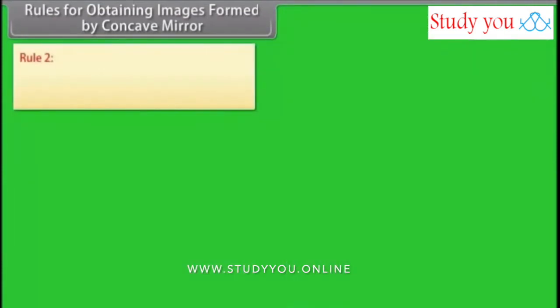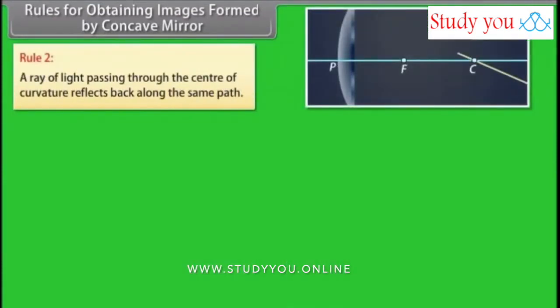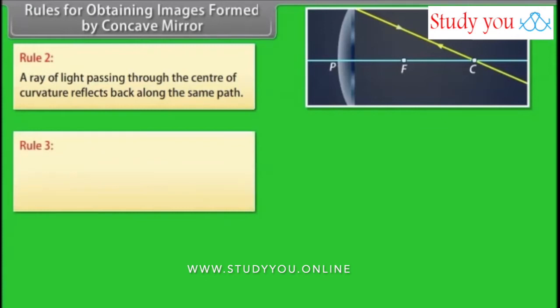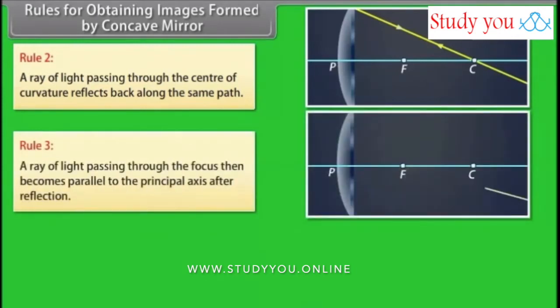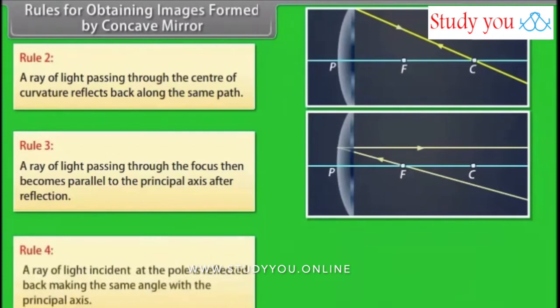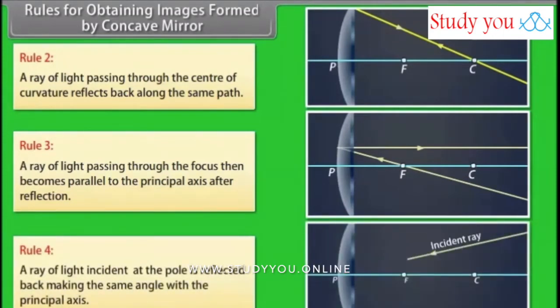Rule 2: A ray of light passing through the center of curvature reflects back along the same path. Rule 3: A ray of light passing through the focus becomes parallel to the principal axis after reflection. Rule 4: A ray of light incident at the pole is reflected back making the same angle with the principal axis.